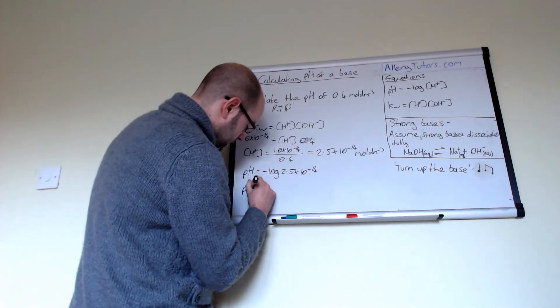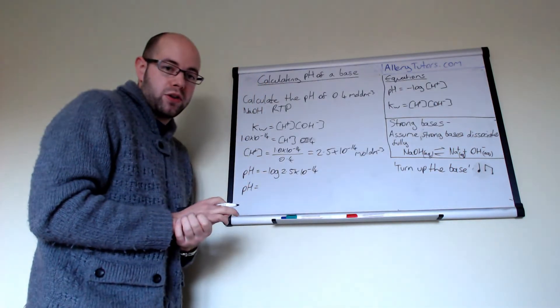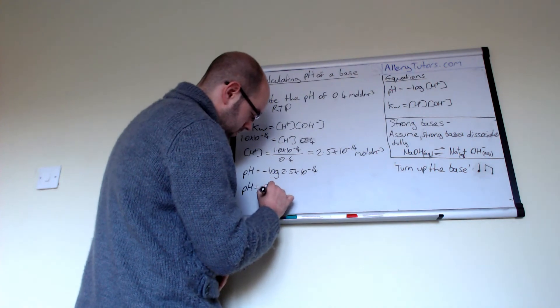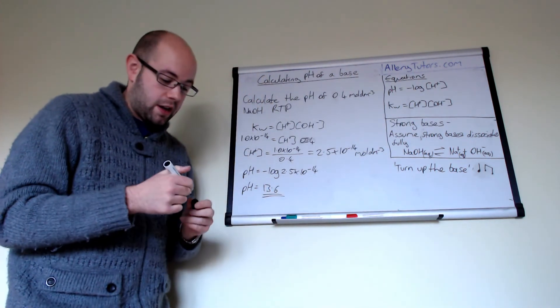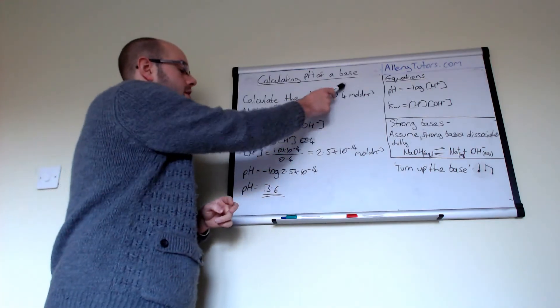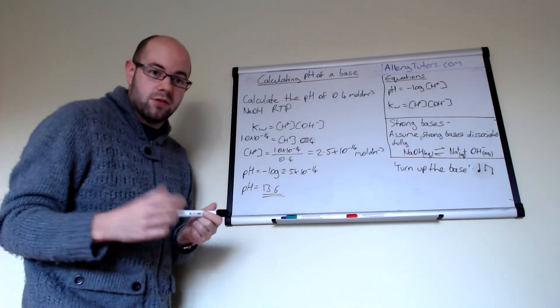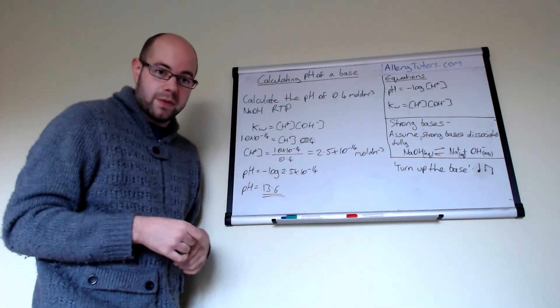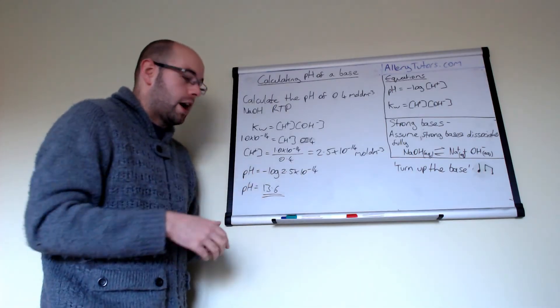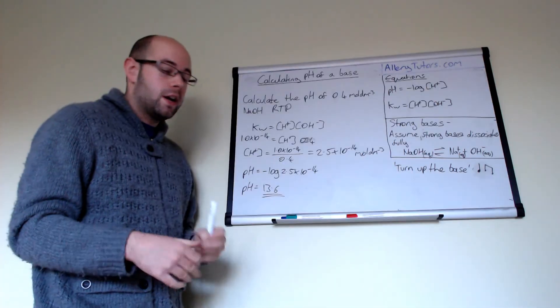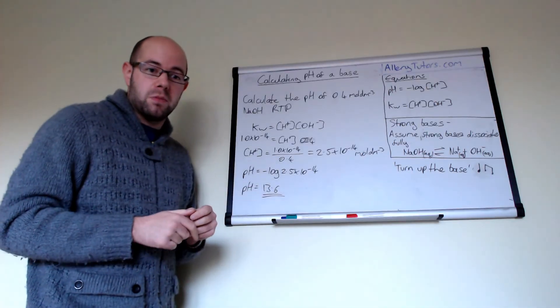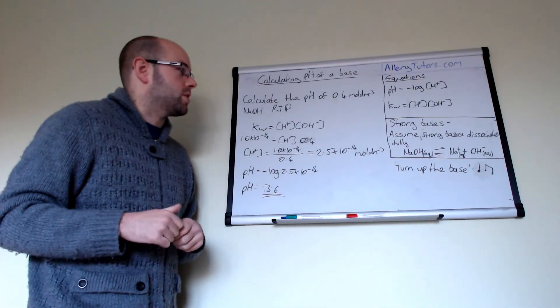Our pH value should come out at 13.6, if you put that into your calculator. That would be sensible, because our bases do have pH that is greater than 7. This number comes out greater than 7. It's quite a high number, close to 14 as well, which again suggests it's a strong base. This number is a sensible number to suggest for this reaction.